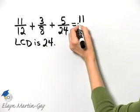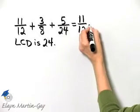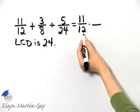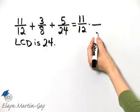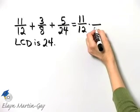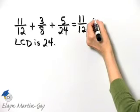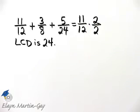So my first fraction is 11 over 12, and I ask myself, what do I multiply 12 by in order to have a product of 24? The answer is 2, so I multiply by 2 over 2.